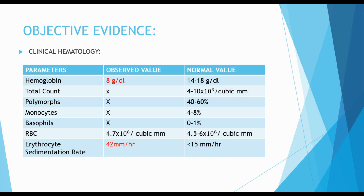Now we will move from subjective evidence to objective evidence. We will add the details of the objective evidence and the general examination findings. Then we will go to the laboratory investigation. In the laboratory investigation, we have clinical hematology, and we have the values of the blood samples.